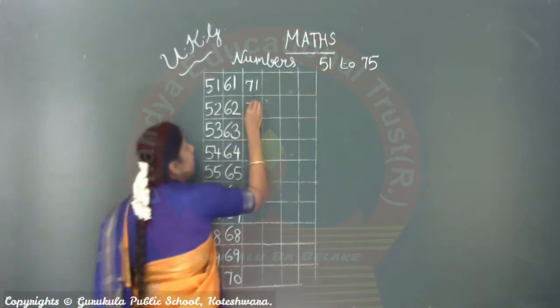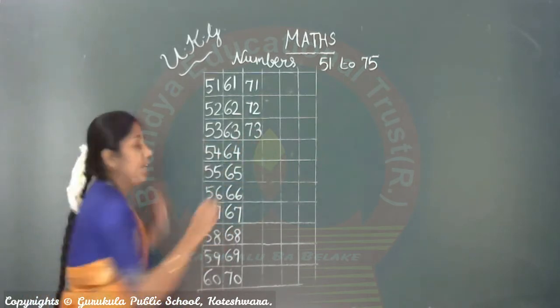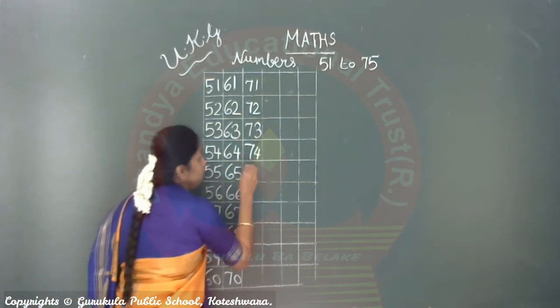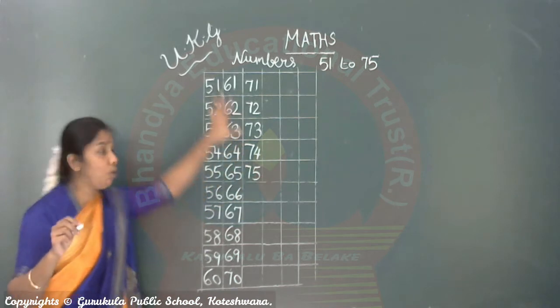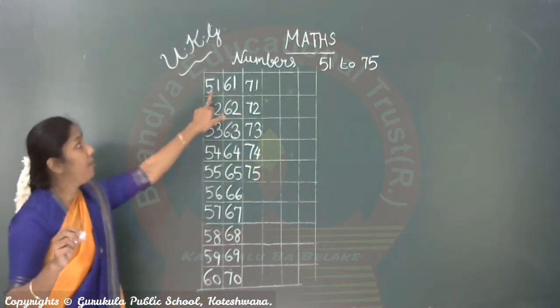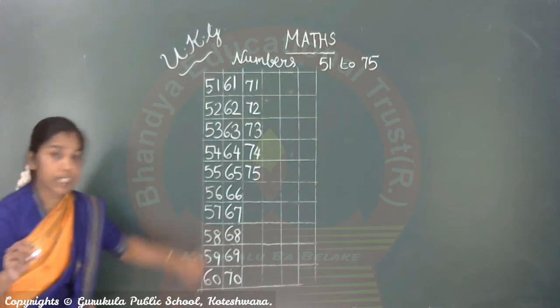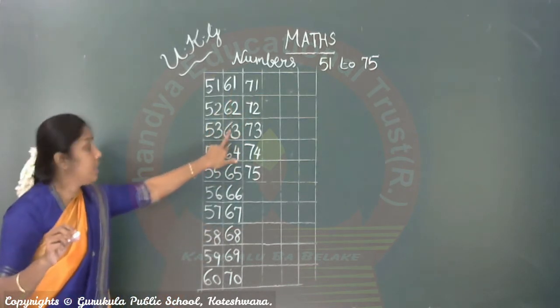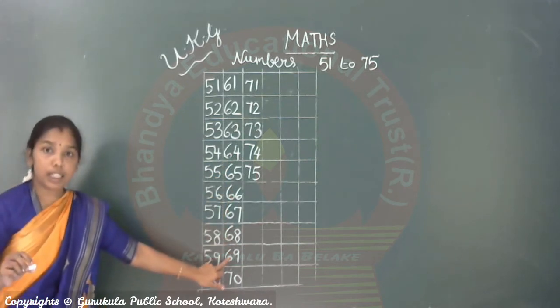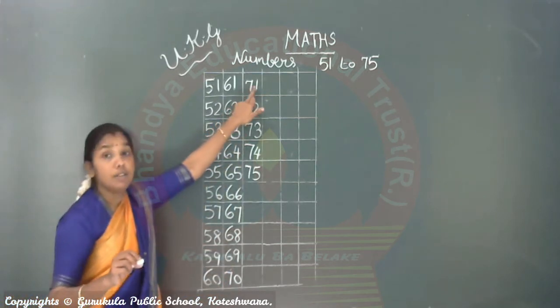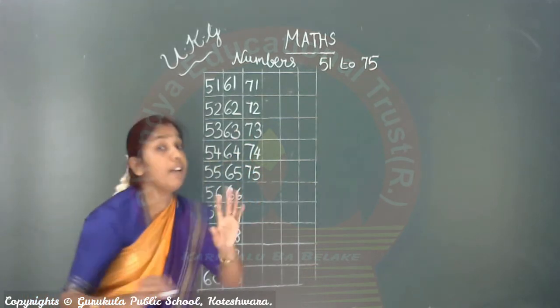Then comes 71. 7, 1, 71. And then 7, 2, 72. 7, 3, 73. 7, 4, 74. 7, 5, 75. Now we are going 51 to 75, so hope you all can understand this. Yes. 51, 52, 53, 54, 55, 56, 57, 58, 59, 60, 61, 62, 63, 64, 65, 66, 67, 68, 69, 70, 71, 72, 73, 74, and 75.